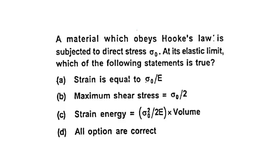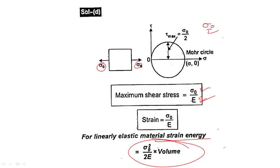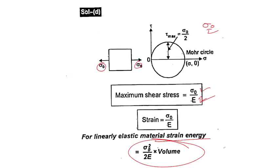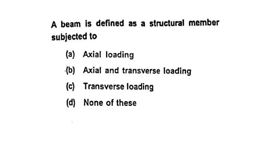Next question: A material obeying Hooke's law is subjected to direct stress at its elastic limit. Maximum shear stress τmax = σ₀/2 from Mohr's circle. For a linear elastic material, strain energy = σ²/(2E) × Volume, or equivalently (σ₀/2)² terms apply. The answer is that all options are correct.